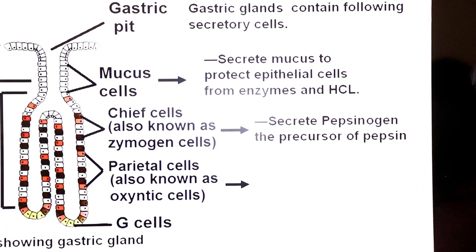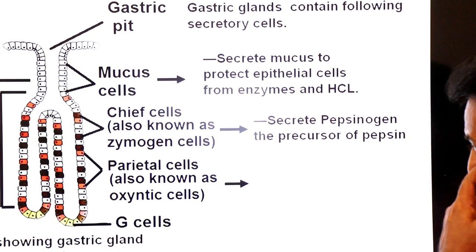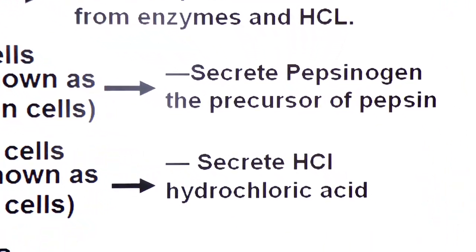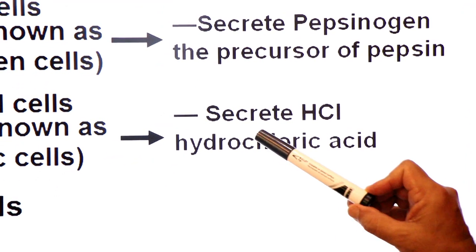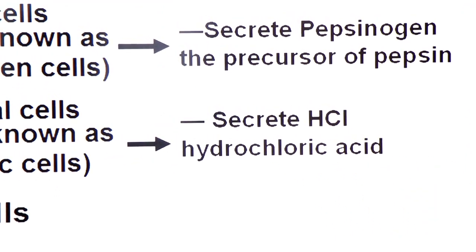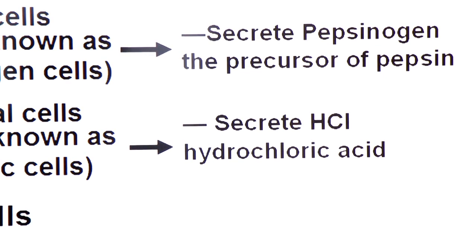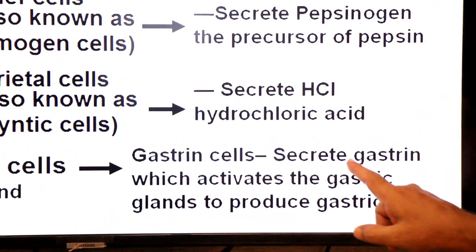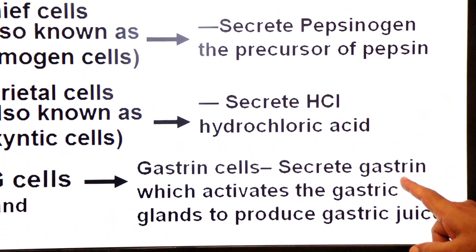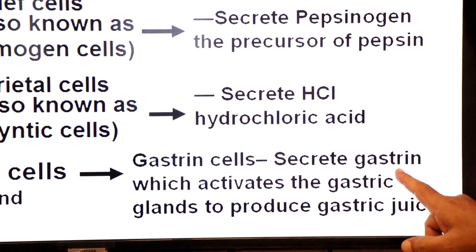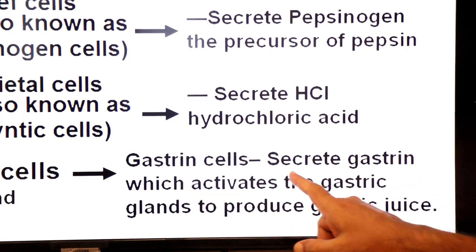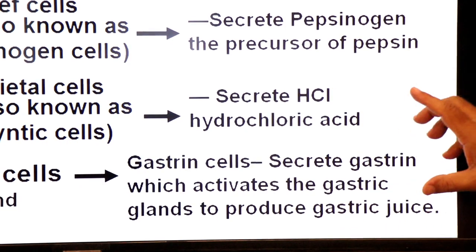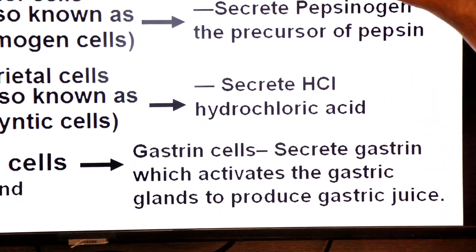Parietal cells, also known as oxyntic cells, are the cells that release hydrochloric acid in your stomach. G cells are endocrine cells that secrete gastrin hormone, which activates the gastric glands to produce gastric juice. So gastric juice contains hydrochloric acid and pepsin.